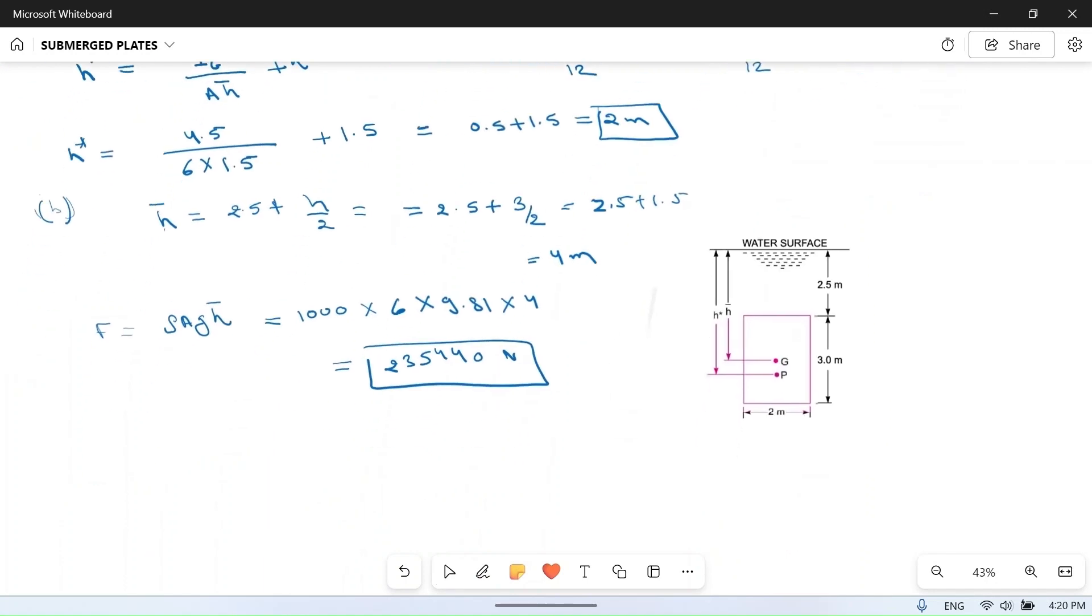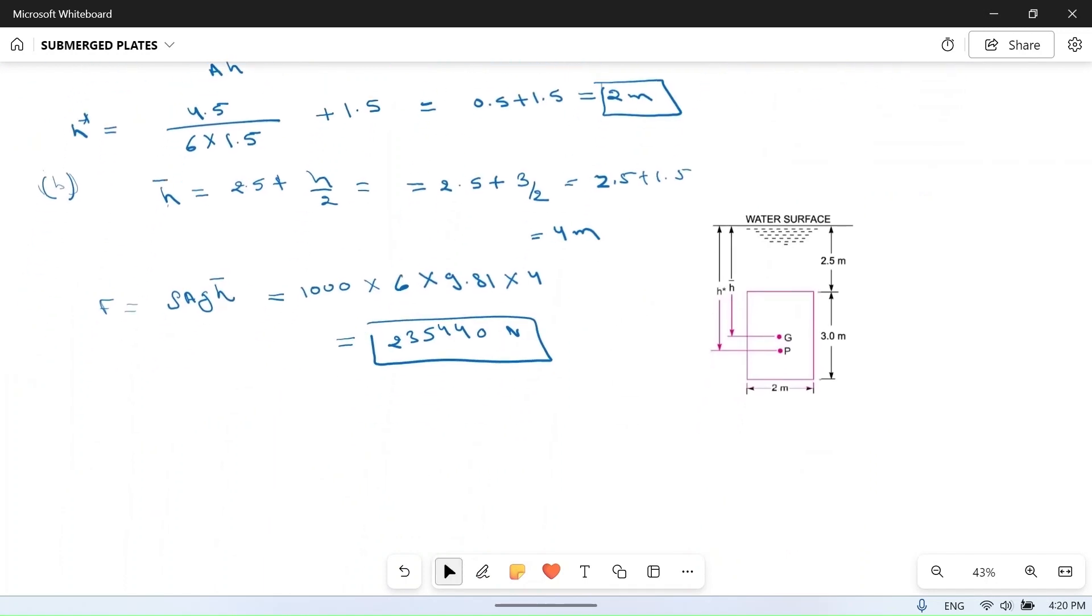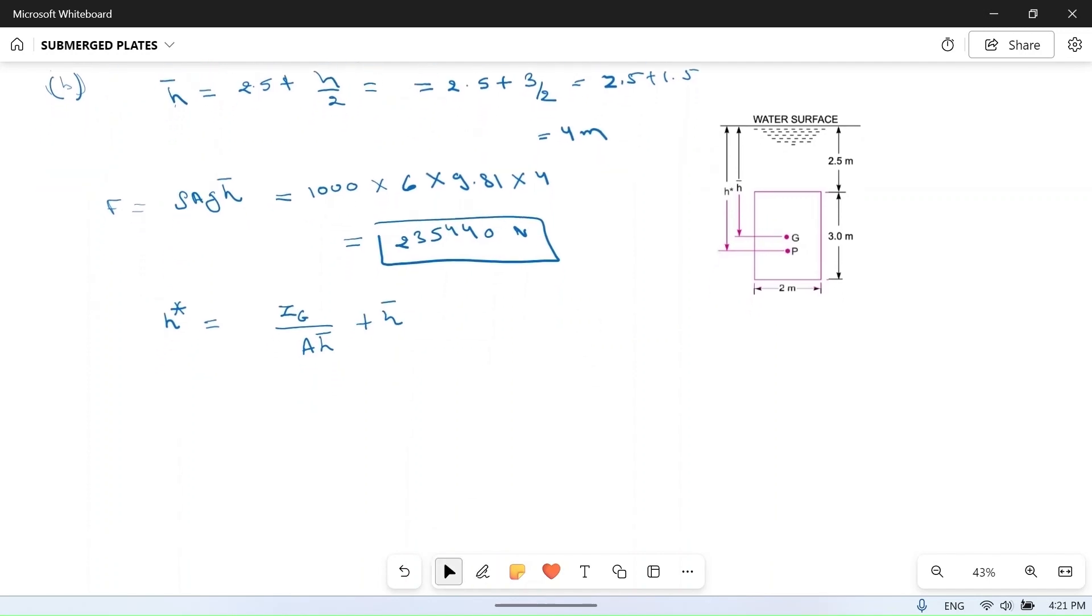Now center of pressure, depth of center of pressure h* is equal to Ig/(A·h̄) + h̄. So it will be equal to Ig is already known to us, 4.5, moment of inertia around center of gravity, 4.5 divided by area 6 into h̄ 4 plus h̄ 4. So if you calculate it you will get 0.1875 plus 4, so it will become 4.1875 meters.